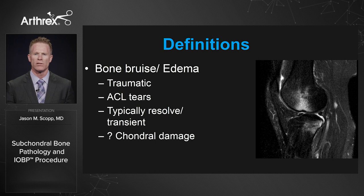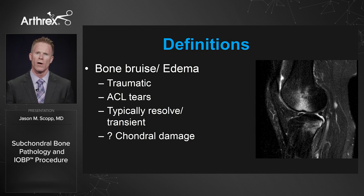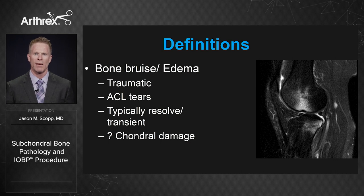Let's move on to different etiologies of bone bruise or bone marrow edema, separate from osteonecrosis. It's very common to see a traumatic bone bruise — typically in an athletic individual or someone who twists their knee, presenting with knee pain, no meniscus tear, and an MRI showing bone marrow edema. We all know about the pivot shift, commonly seen with an ACL tear. These are typically transient and resolve over time, though the question of long-term chondral damage remains open.